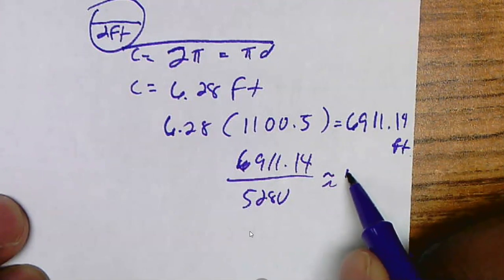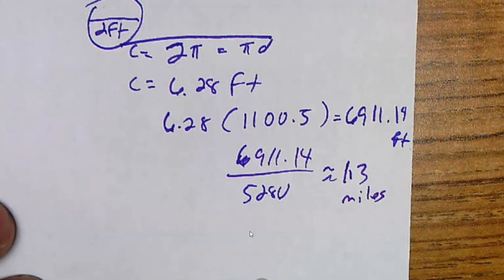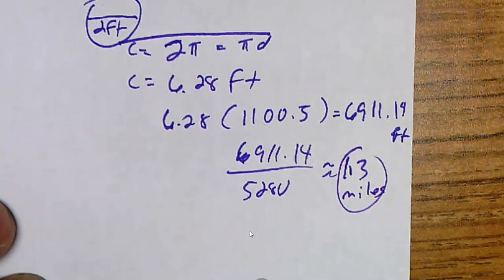So it says the nearest tenth, and to the nearest tenth is 1.3 miles. So that's how long the trail is. Thank you.